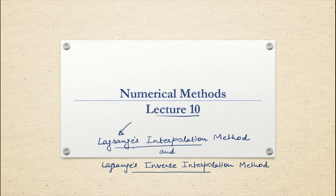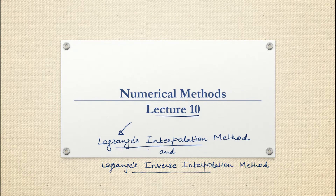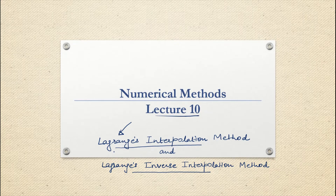What we discussed in Newton's interpolation methods is that when the data points are equally spaced, we use Newton's forward and backward interpolation method, and when the data points are unequally spaced, we go for Newton's general interpolation method — also called Newton's divided difference method. Lagrange's interpolation method is also the same as Newton's general interpolation method.